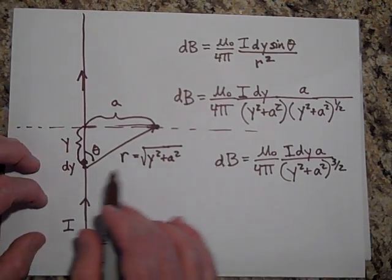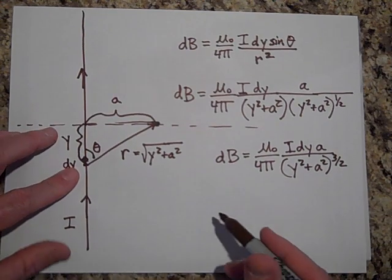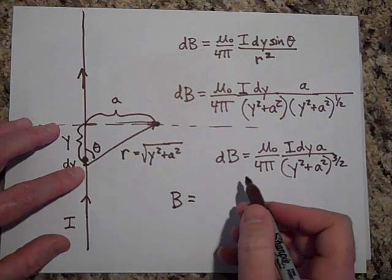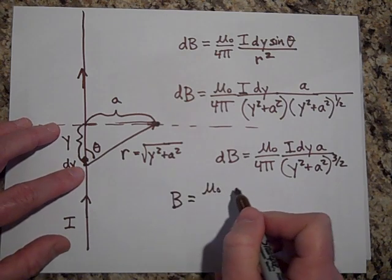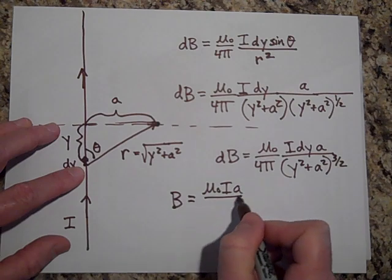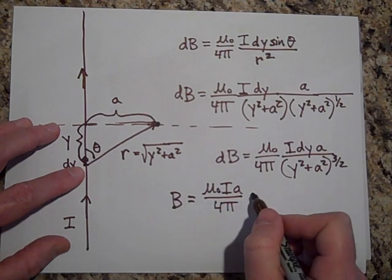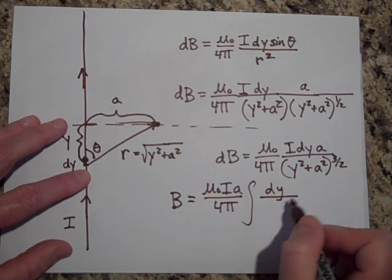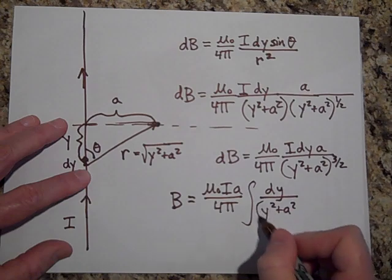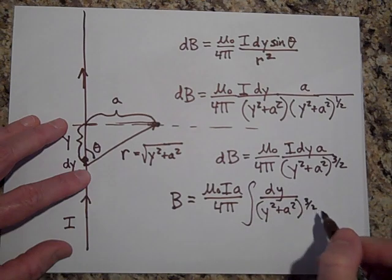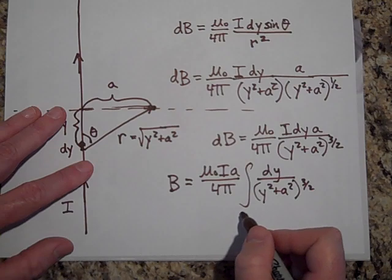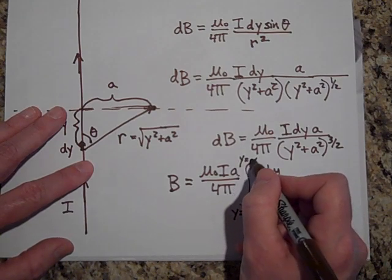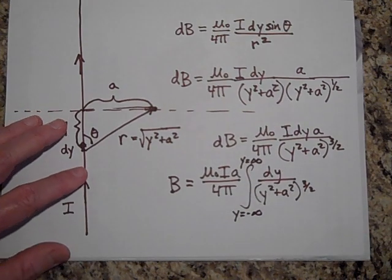Okay. Now I don't want just the field just due to this current element. So to get the fields due to all of them, I'm going to sum up with an integral. I'm going to pull out all the constants, mu naught, I, A over four pi. And I'm going to sum up the DY over Y squared plus A squared to the three halves power. And I'm going to start at Y equals negative infinity. And I'm not going to stop summing those to Y equals infinity.